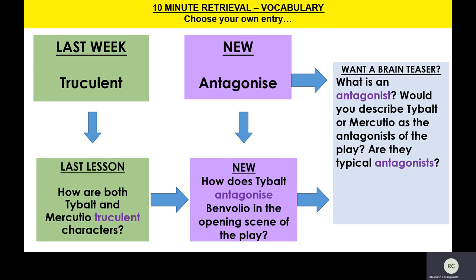So, if you're truculent, you are very aggressive and very defiant. This is a word that can be used to describe Tybalt at the start of the play and throughout. In Act 1, Scene 5 that we looked at last week, when he refuses to back down even though Lord Capulet is ordering him to just leave Romeo alone — that's not something Tybalt is prepared to do. He's also very truculent in that he refuses to stop the servants fighting at the start of the play.